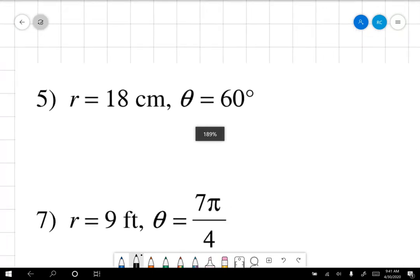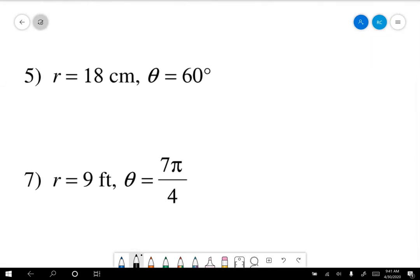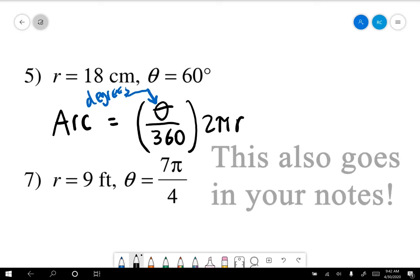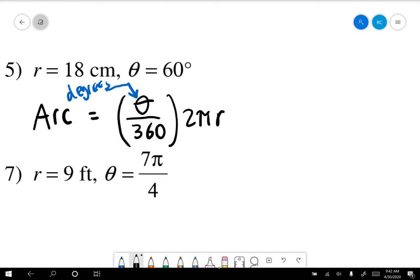This time we're not given a circle, just a radius and a theta. This theta for number five is in degrees. Let's remind ourselves: in degrees, you have to take theta and divide it by 360, and that is theta in degrees, and you multiply that by 2πr. Man, radians make it so much easier.